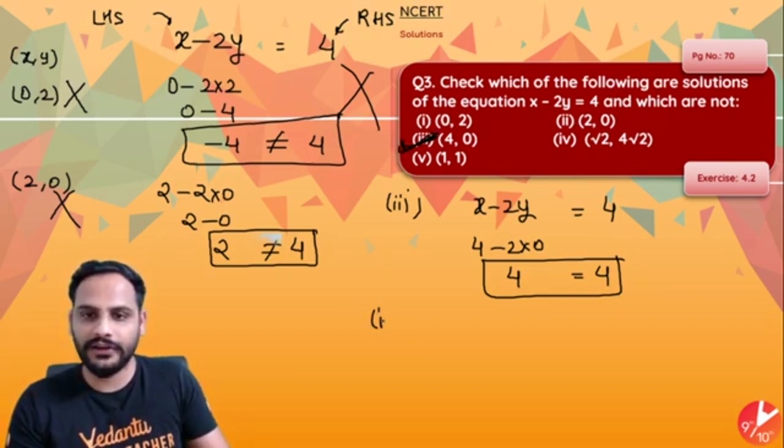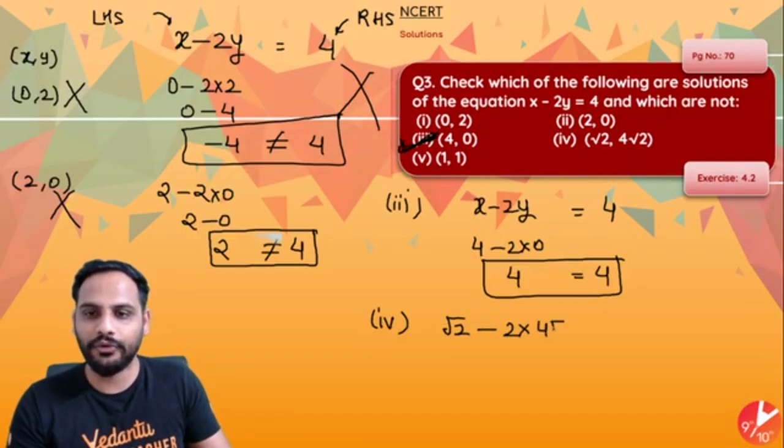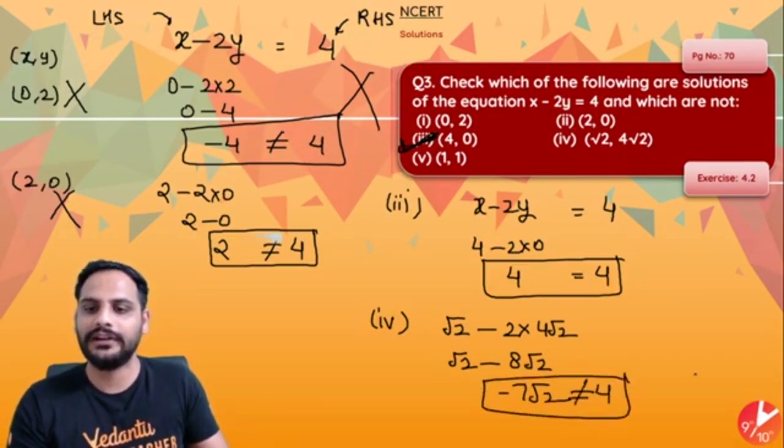Fourth one, root 2 minus 2 times of 4 root 2. So it will become root 2 minus 8 root 2 which is minus 7 root 2 and that is not equal to 4. So it is again not a solution.